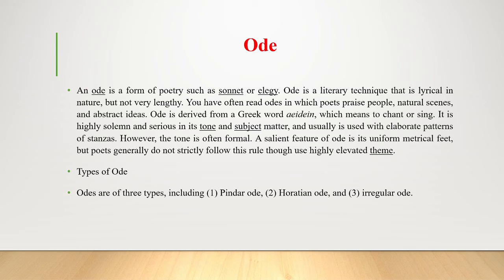Let me recap. An ode is a form of poetry, such as a sonnet or elegy. It is lyrical in nature but not very lengthy. Poets often use odes to praise people, natural scenes, and abstract ideas. The word 'ode' is derived from the Greek word 'odeion,' meaning to chant or sing. It is highly solemn and serious in tone and subject matter, and usually uses elaborate patterns of stanzas. The tone is often formal, and a salient feature of ode is its uniform metrical form, though poets generally do not strictly follow this rule.